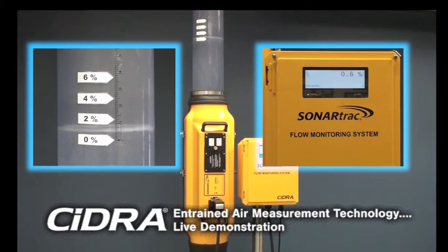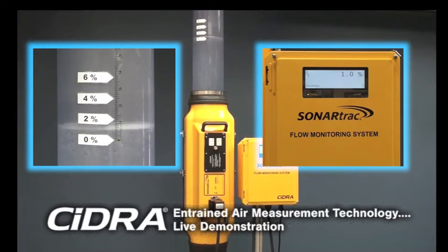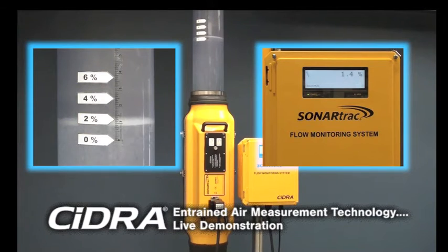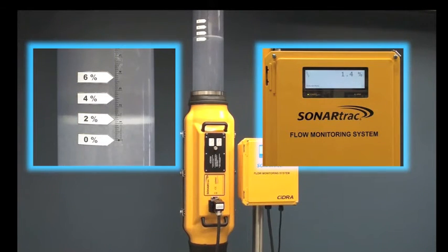The air level is indicated by the markers on the column of water. As air is added, the volumetric change is indicated by the height increase in the level of the water at the top of the column. The air volume measured by the device is indicated on the transmitter readout system to the right.